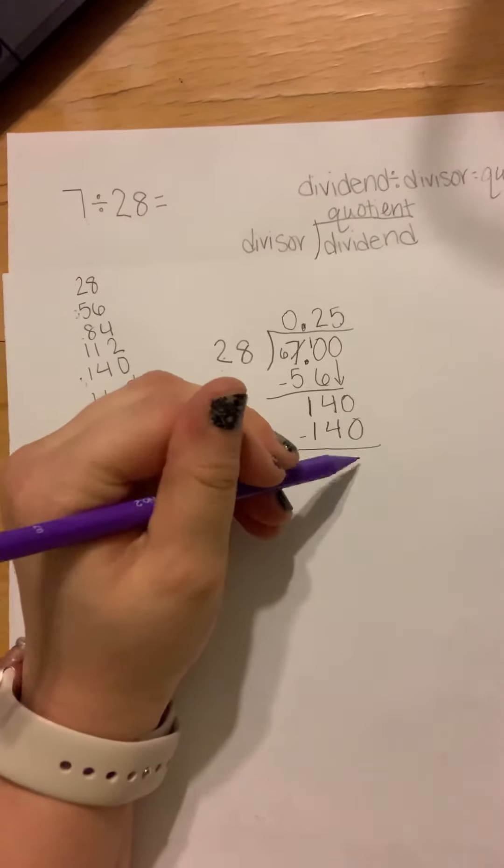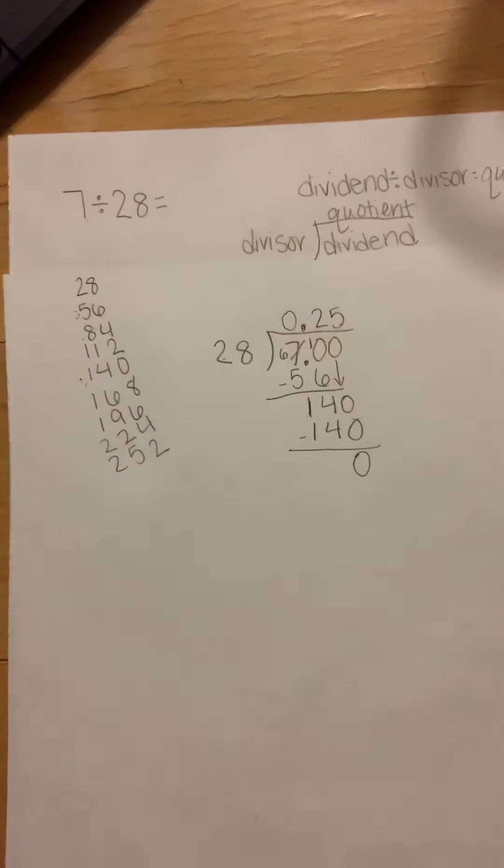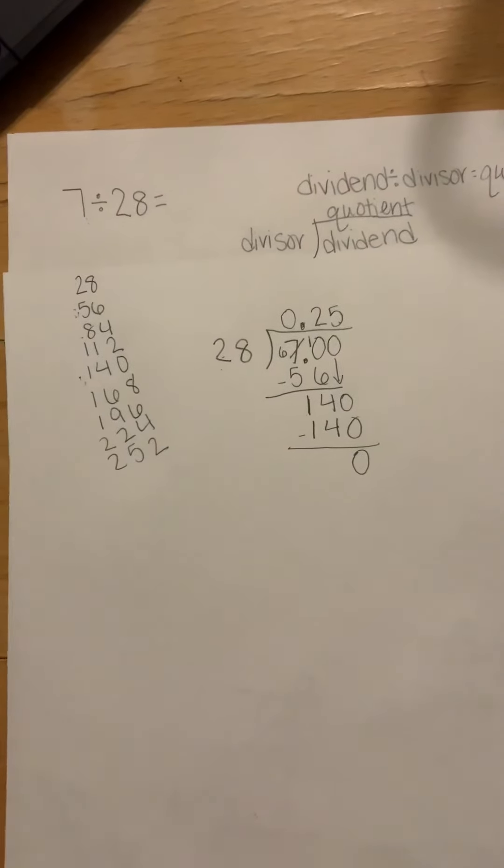Five times 28 is 140. And now I'm at my favorite part of long division. Look at the bottom. You see a nice little zero. So that tells me I'm done.